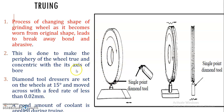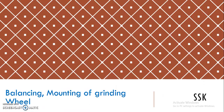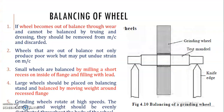Both dressing and truing are performed with the help of a diamond tool. These are the methods to overcome the drawbacks of glazing and loading. Next in this surface finishing chapter is the balancing and mounting of the grinding wheel. Even after dressing and truing, the grinding wheel sometimes is not brought to a true diameter. Because of glazing and loading, it can become unbalanced through continuous use, resulting in wear.